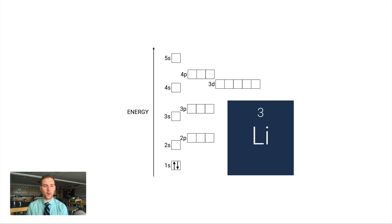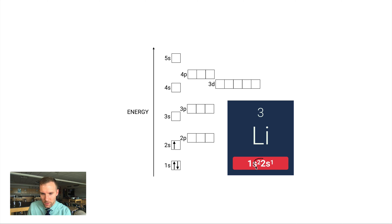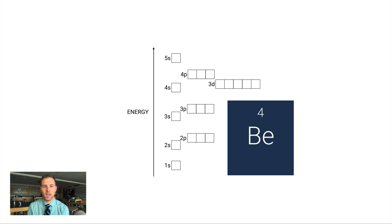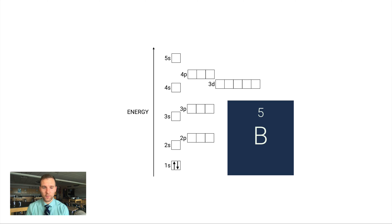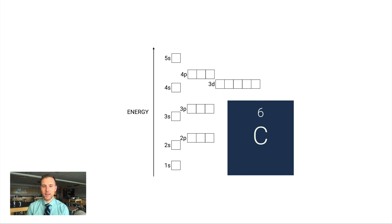Lithium has three electrons. Two fill the 1s subshell, and the third moves to the next highest energy level — 2s. So the configuration is 1s² 2s¹. The superscripts should always add up to the total number of electrons — a good way to check your work. Beryllium has four electrons: 1s² 2s². Boron has five electrons: 1s² 2s² 2p¹ — we go to 2p next rather than 3s because 3s requires much more energy.